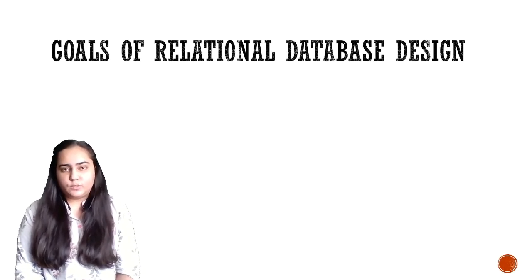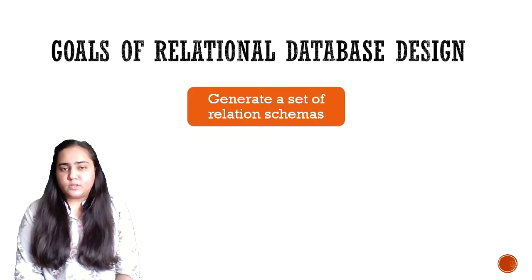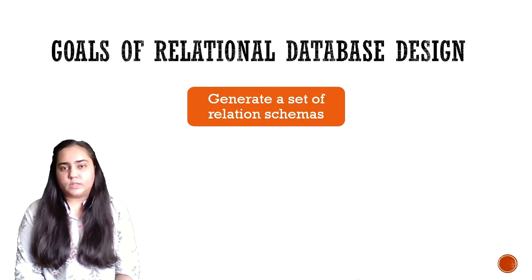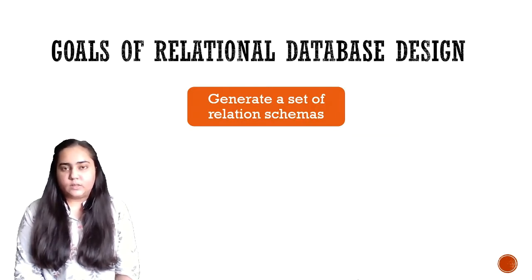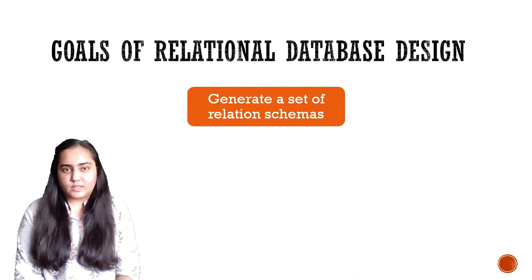First we are going to see what the different goals of relational database design are. The first goal is to generate a set of relation schemas. Whenever you have to design a database, you need to first decide what types of relations you require, how many relations you require, and also decide what the columns in those relations will be — the attributes and the data types of these attributes. These are some of the basic necessities while designing a database.